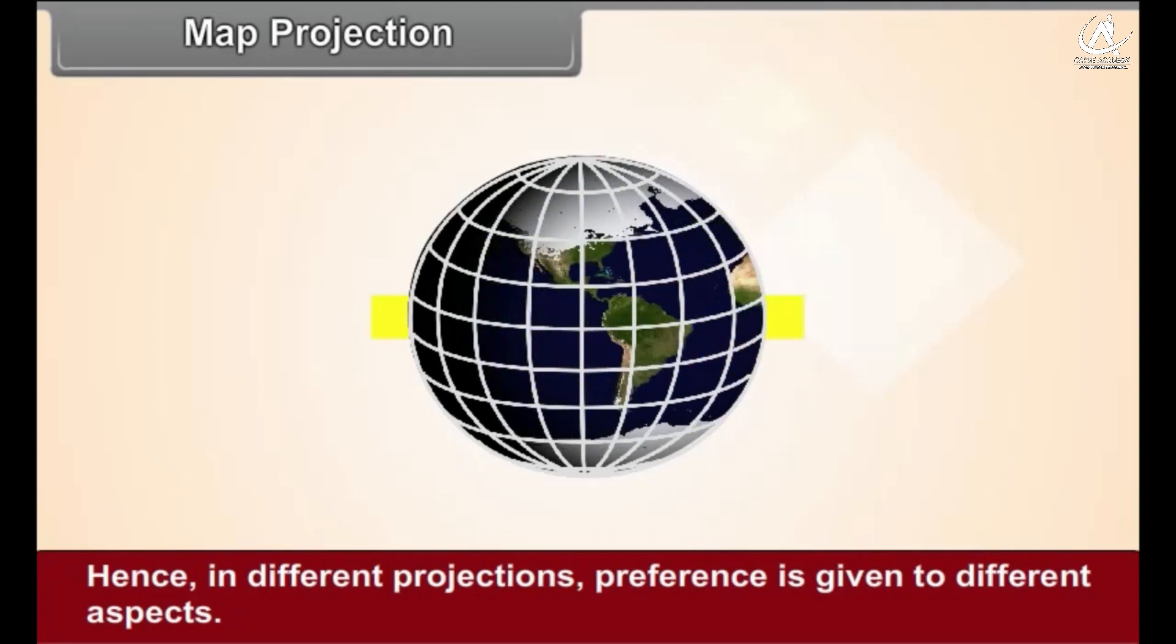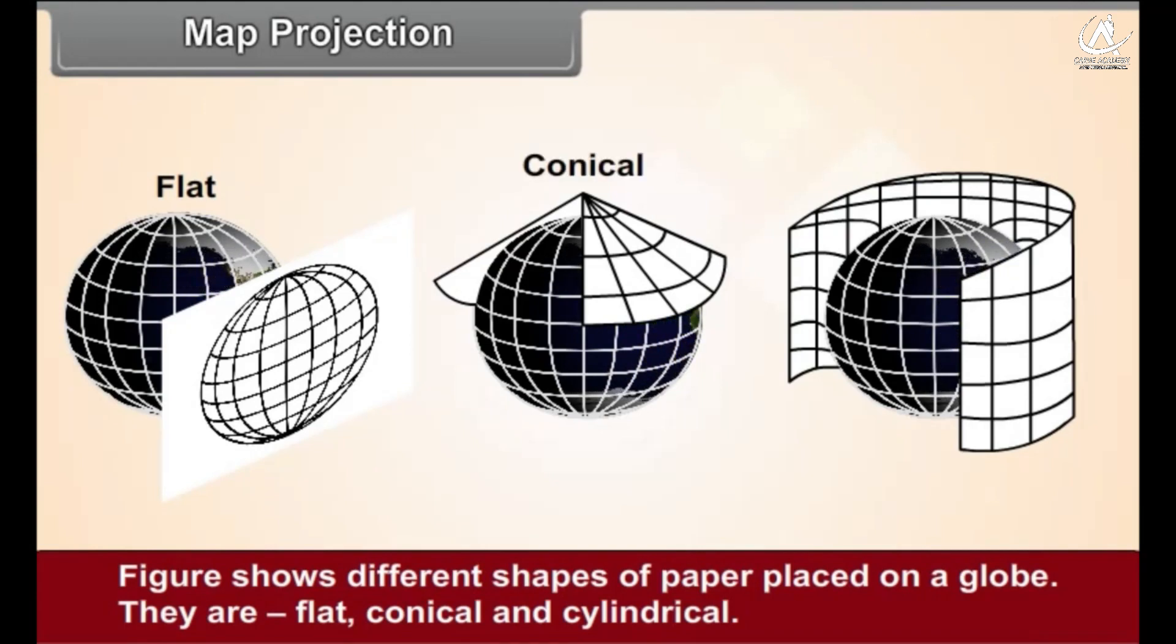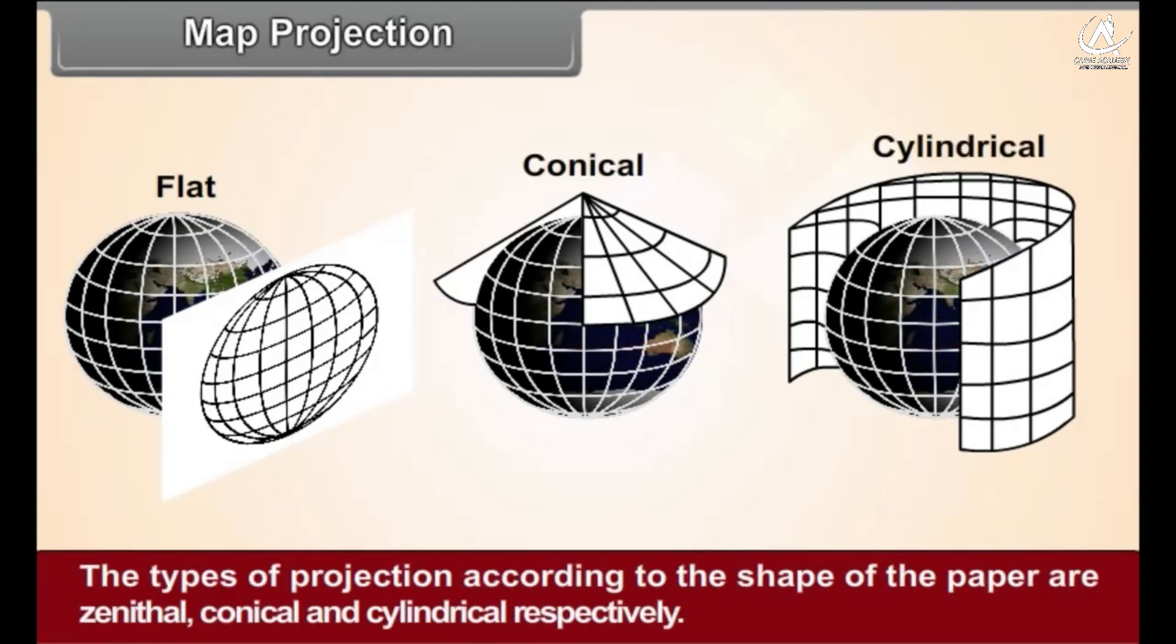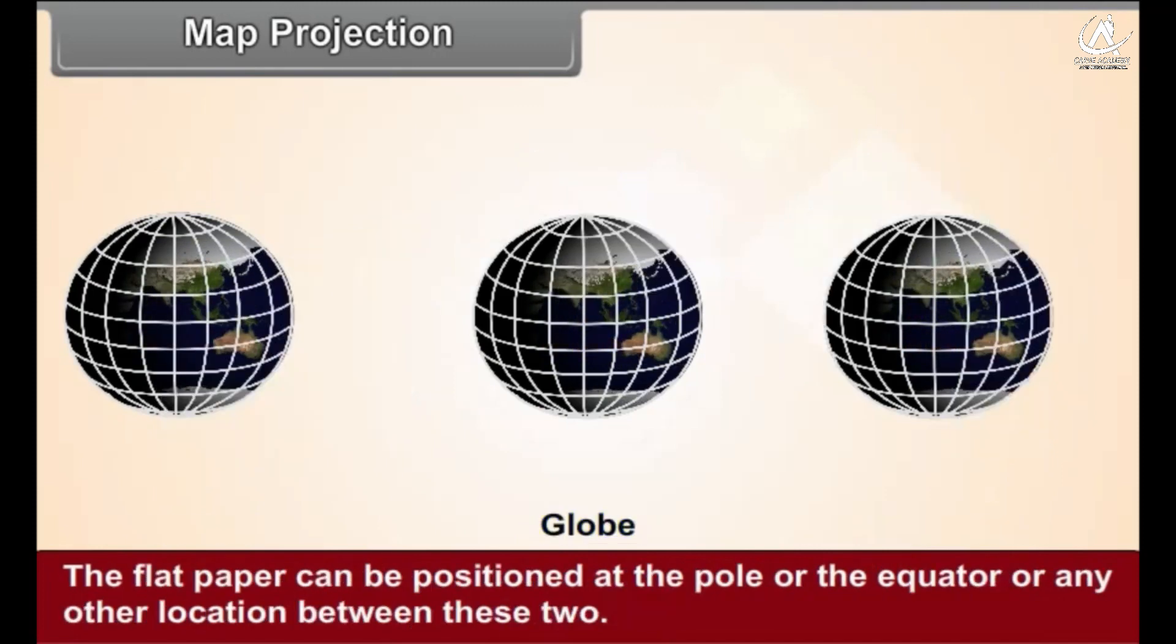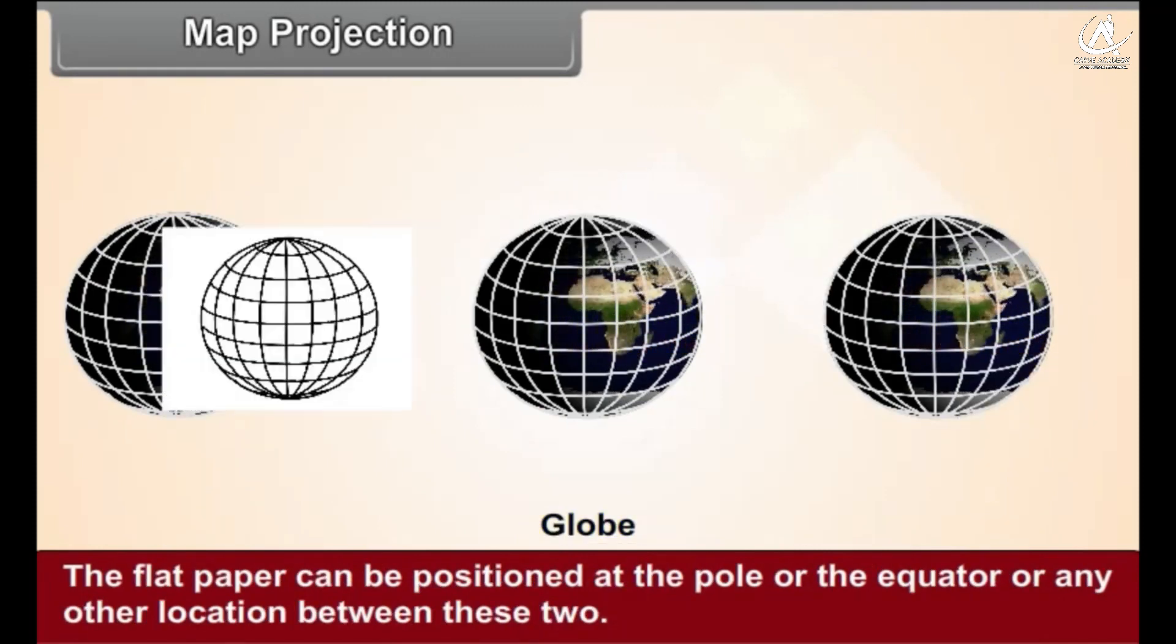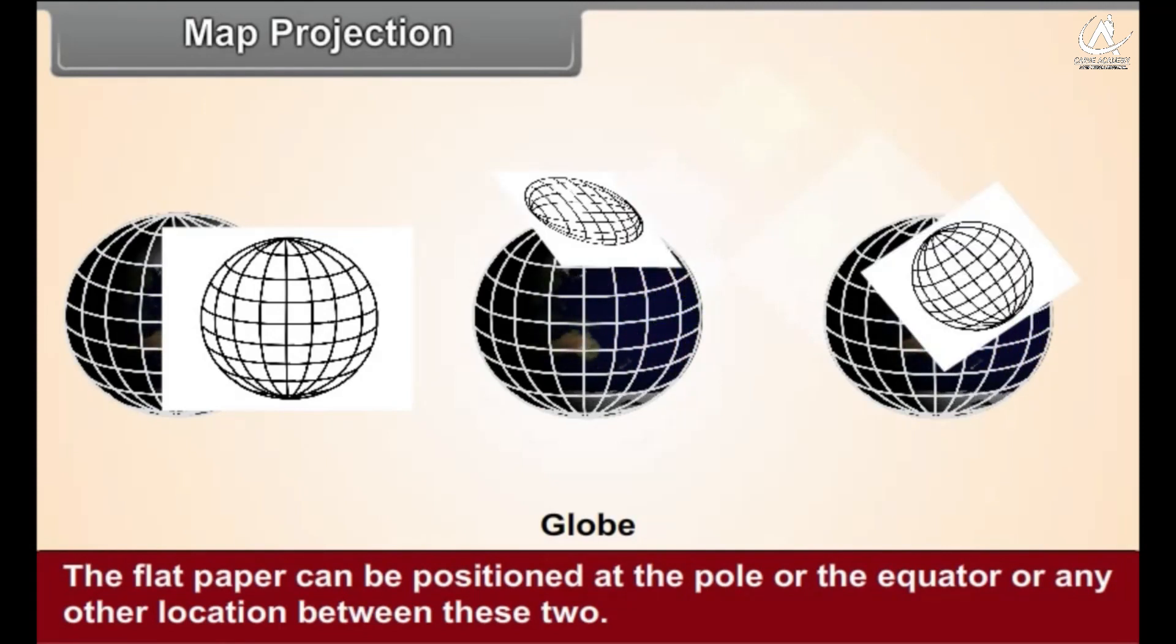Figure 2.1 shows different shapes of paper placed on a globe: they are flat, conical, and cylindrical. The types of projection according to the shape of the paper are zenithal, conical, and cylindrical respectively. The flat paper can be positioned at the pole or the equator or any other location between these two.